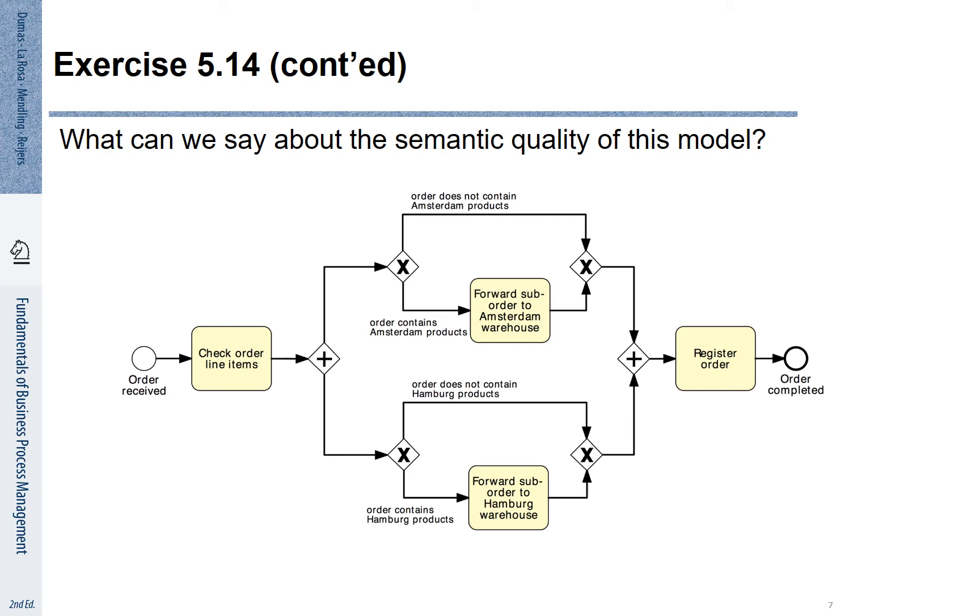So what can we say about the semantic quality of this model? There is an issue. It's invalid because we potentially may bypass any of the forwarding activities. That means after the AND split we may choose to select the path ORDER DOES NOT CONTAIN AMSTERDAM PRODUCTS as well as the path ORDER DOES NOT CONTAIN HAMBURG PRODUCTS. If that is the case we do not produce any sub-orders. Apparently this is not what is really happening. That means this model is semantically not correct according to the description of the process.